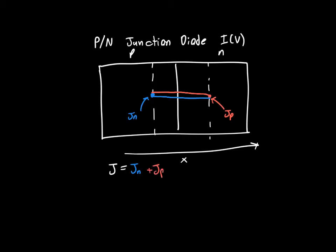In order to find these two currents individually, we said previously that we can solve the continuity equation in the N region for delta P and in the P region for delta N, because these are the dominant carriers responsible at this point. We can just plug in the point x equals zero into that continuity equation and solve for the total current. So we're going to start with solving the continuity equation in the N region for delta P.